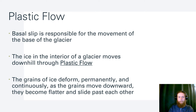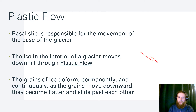Basal slip is responsible for movement at the base of the glacier. Plastic flow is what's happening on the interior. The grains of ice are deforming permanently and continuously as they move downward, becoming flatter and sliding past one another. The bottom basal slip and interior plastic flow move at different rates depending on conditions.